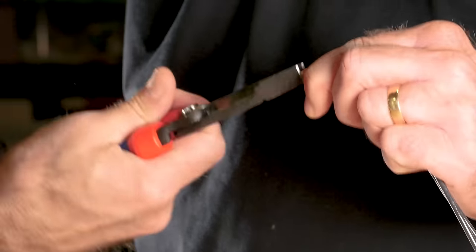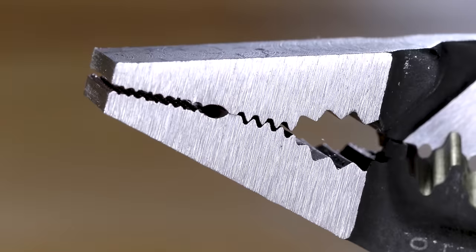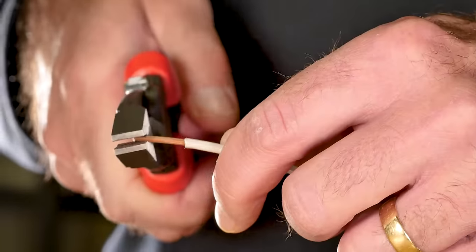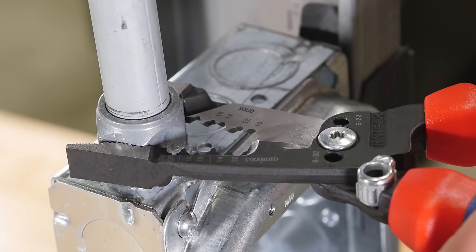Wide, flat jaws made for twisting wires. Wire looping groove to get the perfect wire loop to attach to screws. Serrated jaws for gripping fittings.